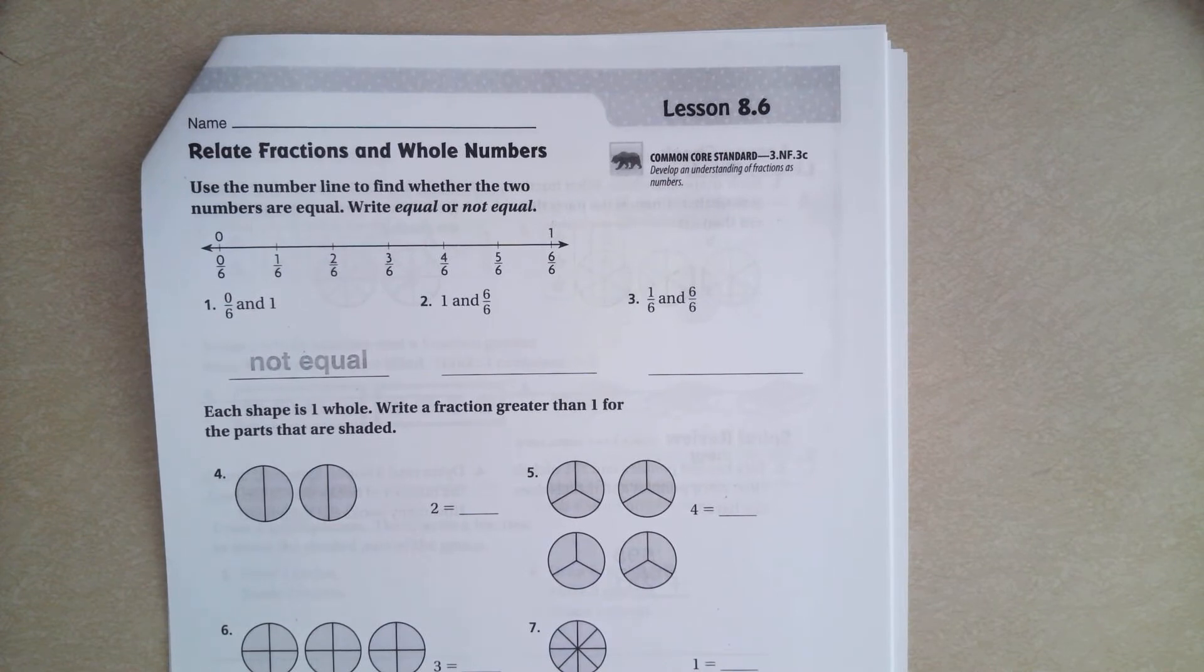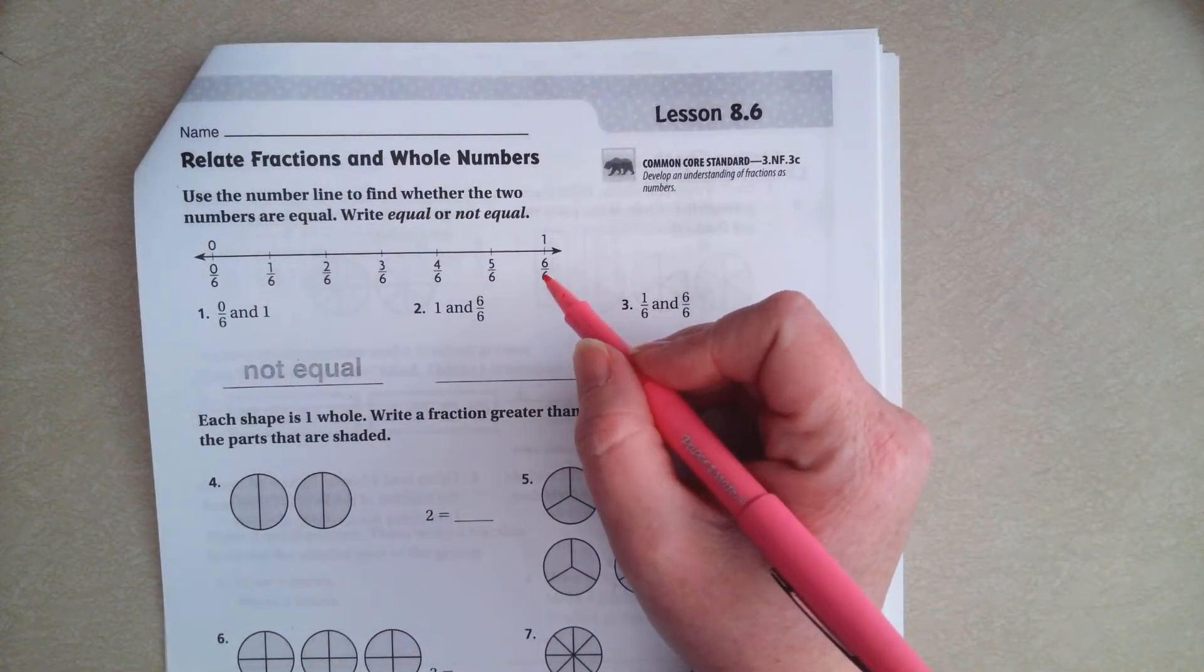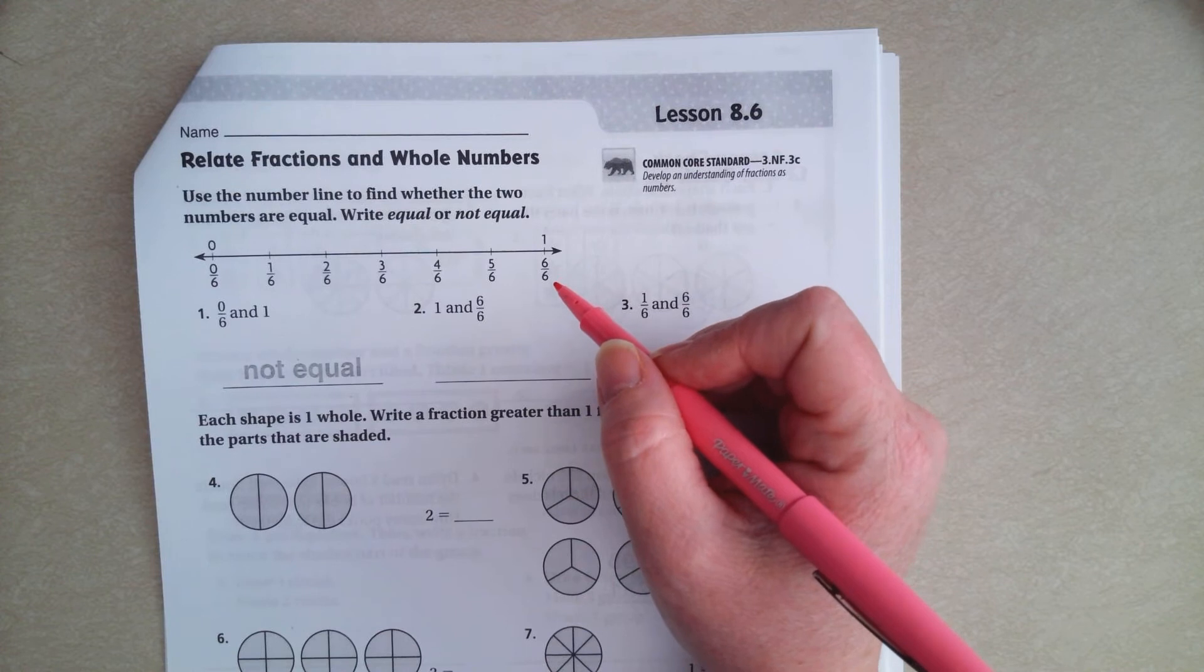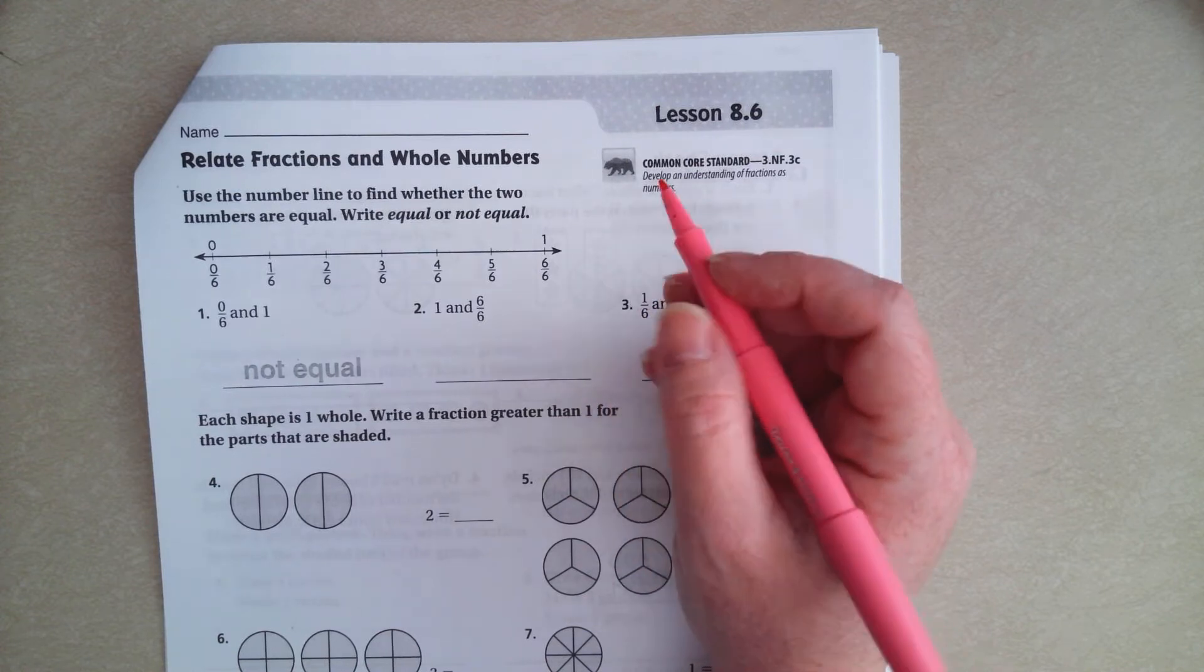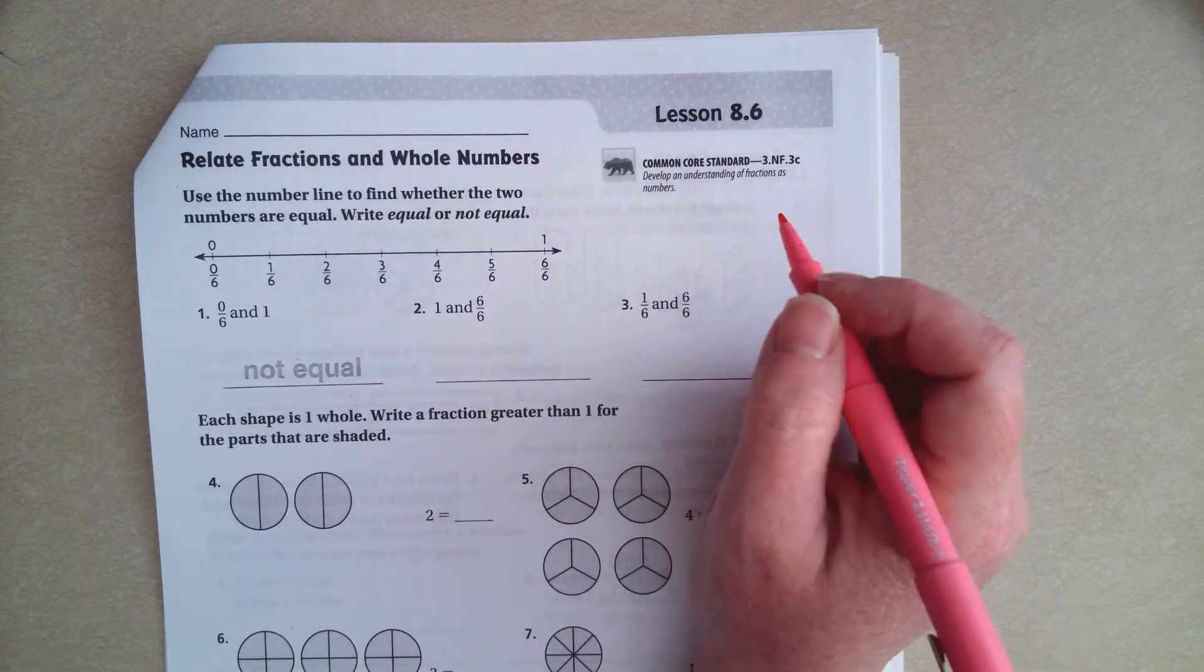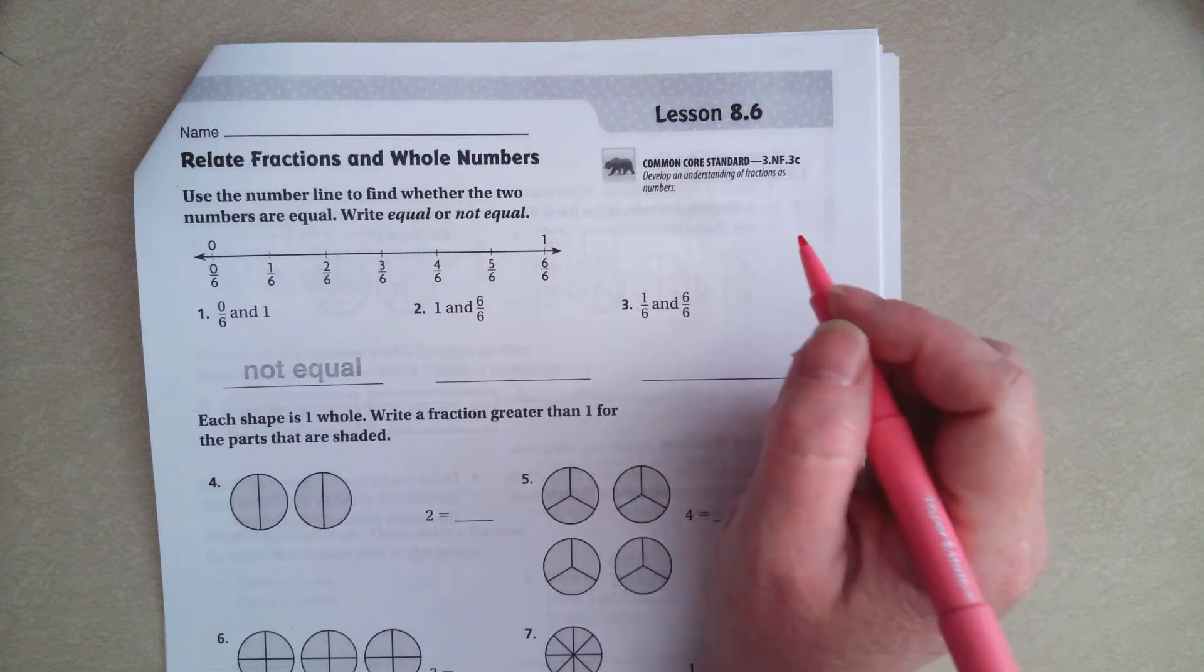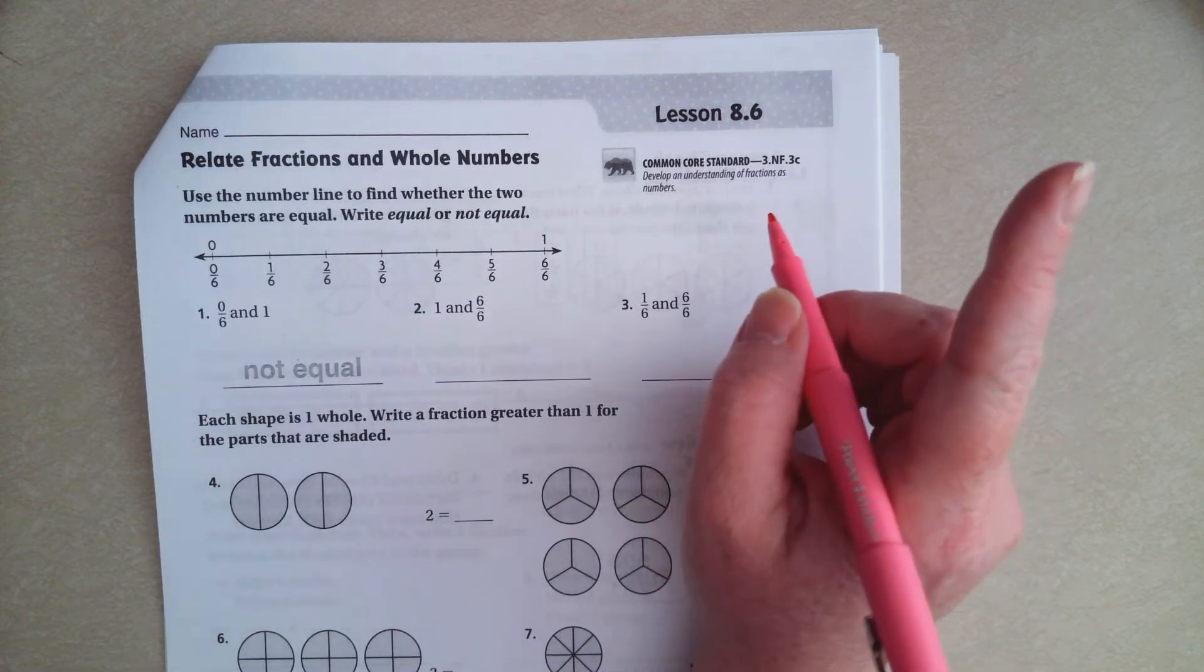First you need to understand that any number that's a fraction over itself, so 6 over 6, that's equal to 1. And that's whether it's 1 over 1, 10 over 10, 20 over 20, 100 over 100. Any number over itself is equal to 1. Doesn't matter if it's a million over a million, it's equal to 1.